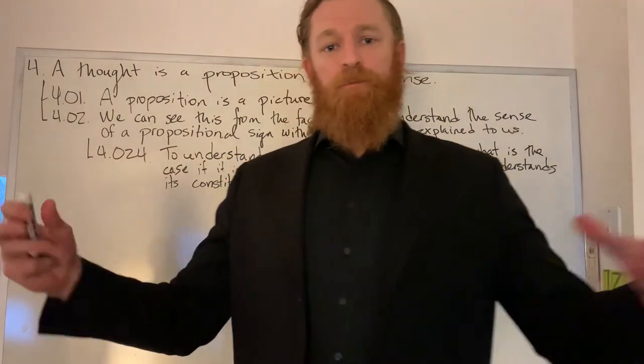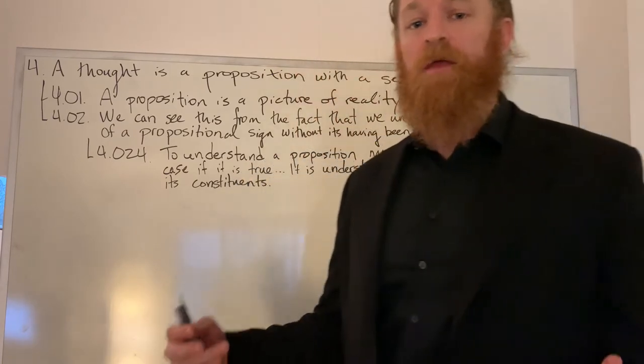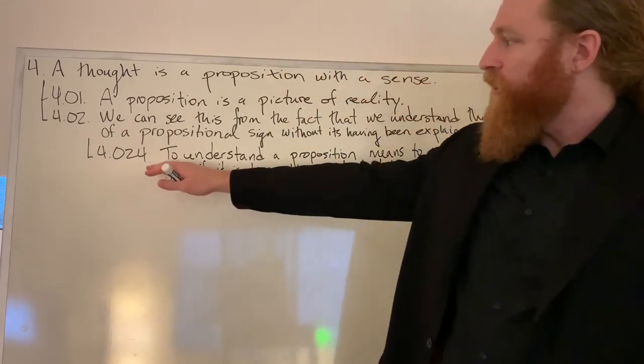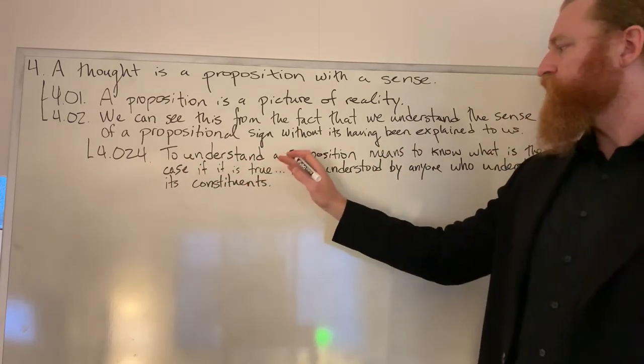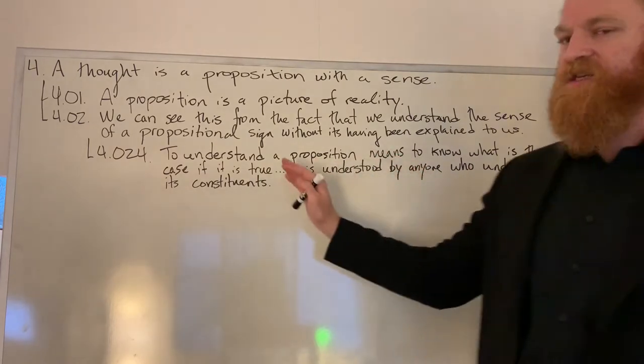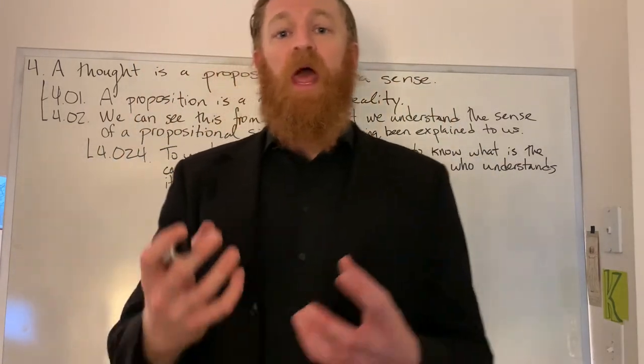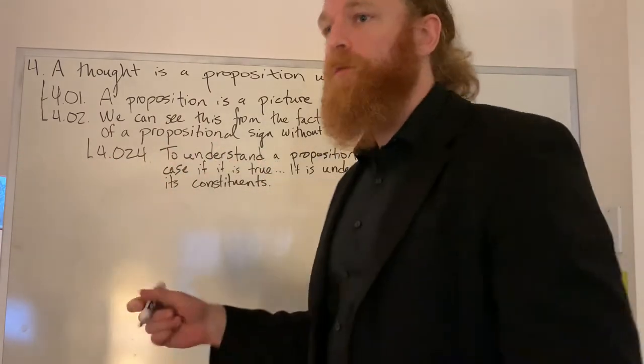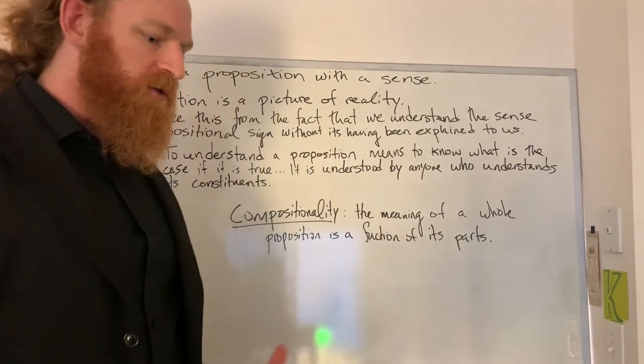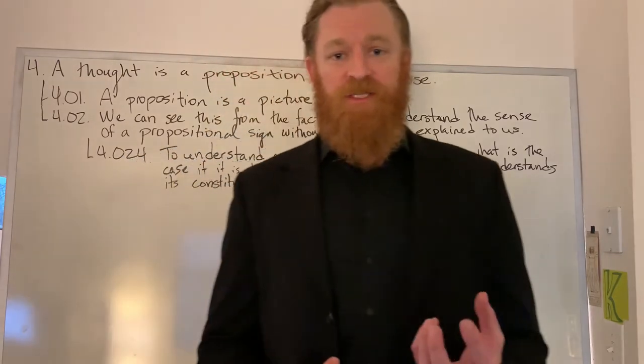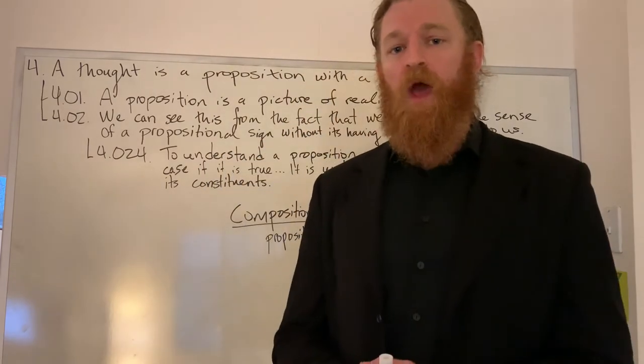This leads Wittgenstein into building into his conception of proposition a very important property that is popularly known as compositionality. That's what Wittgenstein is getting at in 4.024 when he says to understand a proposition means to know what is the case if that proposition is true. It is understood by anyone who understands its constituents. That is to say, understanding a proposition requires nothing more than understanding the parts that enter into it. By understanding the parts, we can then understand the whole. So compositionality is the idea in logic that the meaning of a whole proposition is a function of the meaning of its parts. So if we could get the meaning of the parts down, then we're able to get the meaning of the whole simply by putting those parts together in a determinate way.